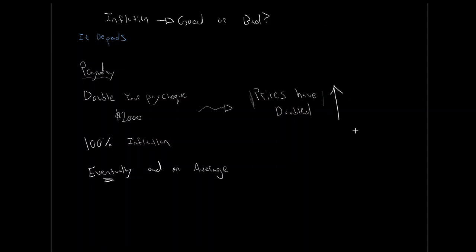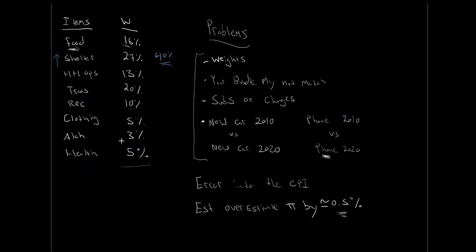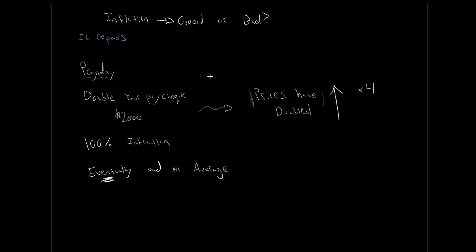The problem is that in reality this adjustment happens eventually and on average — but not instantly or uniformly. Some people's paychecks would more than double, others' would not. Some prices would more than double, some might decrease. This lag and unevenness is where problems arise. If prices jump first, you become poorer until wages catch up. If the stuff you buy quadruples while average inflation only doubled, you're disproportionately hurt. These uneven, slow redistributions of prices and wages are where the costs of inflation emerge.